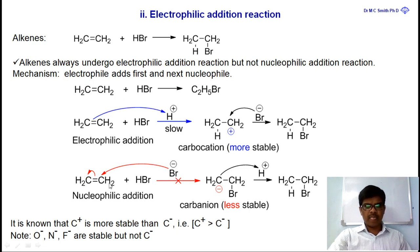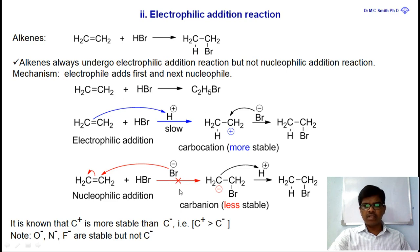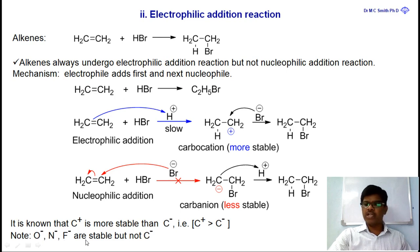If a nucleophile attacks first — meaning nucleophile is added first to the alkene — the intermediate obtained would be a carbanion (C⁻). We know that C⁻ is less stable than C⁺. For comparison, O⁻, N⁻, and F⁻ are stable, but C⁻ is not stable. C⁺ is more stable because carbon is less electronegative compared to oxygen, nitrogen, and fluorine.